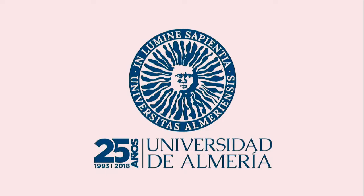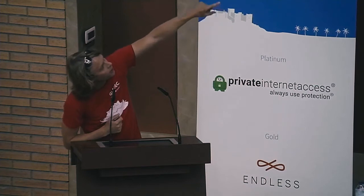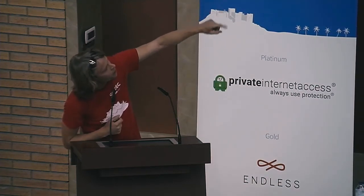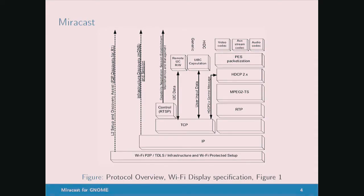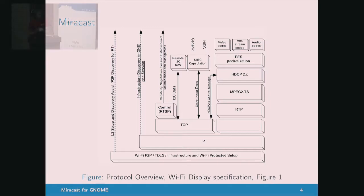This is directly from the specification, and you can see the different layers. At the bottom we have Wi-Fi peer-to-peer, TDLS, infrastructure, and Wi-Fi Protected Setup. Discovery happens either through Wi-Fi peer-to-peer or through multicast DNS on the IP layer — two different separate discovery mechanisms. Then there is the RTSP-over-TCP control stream, used for all the different setup and configuration things, like negotiating the size of the monitor, the different codecs that are supported, and so on.